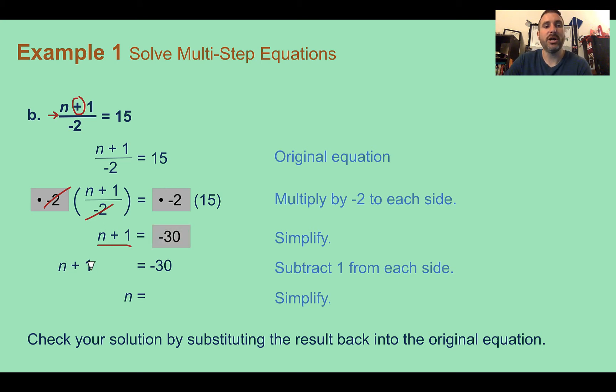Now I just have n plus 1 is equal to negative 30, so I'm going to undo that addition by subtracting 1 from both sides. Positive 1 minus 1 gives us our 0, so there's nothing left. n is equal to, and then negative 30 minus 1, I went down 30, down 1 more, is negative 31.